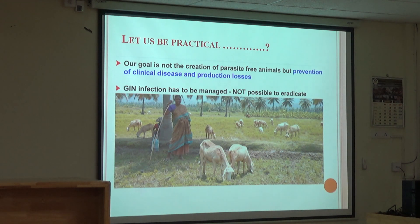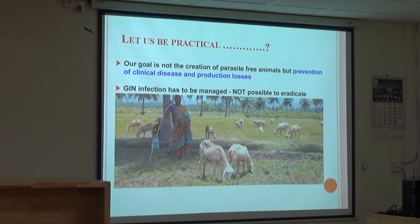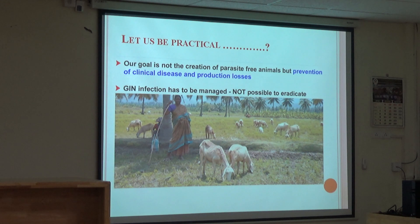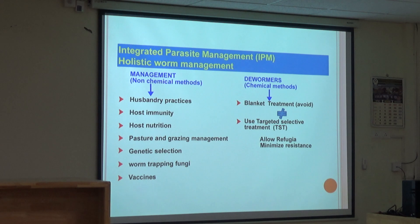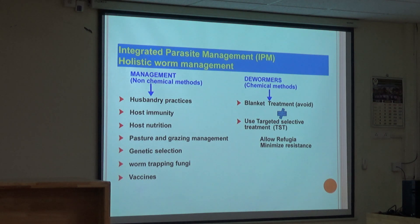Let us be practical. You cannot have an animal which is parasite-free - practically it is impossible, because in the food chain the survivability life cycle goes on. Our goal is not creation of a parasite-free animal, but prevention of clinical disease and the damage caused by it. Gastrointestinal nematode infection has to be managed; it is not possible to eradicate at all. So, integrated parasite management is the way forward.